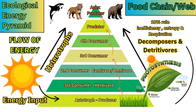Above the first consumer herbivore, we have the second consumer, which could be a carnivore or omnivore. An omnivore eats both plants and meat; a carnivore eats only meat, so a carnivore would eat the caterpillar. Energy continues to flow up the pyramid into whatever is doing the eating. Any organism that must consume another animal to take energy is called a heterotroph. Beyond that, there can be a third and fourth consumer, and then a predator and apex predator.